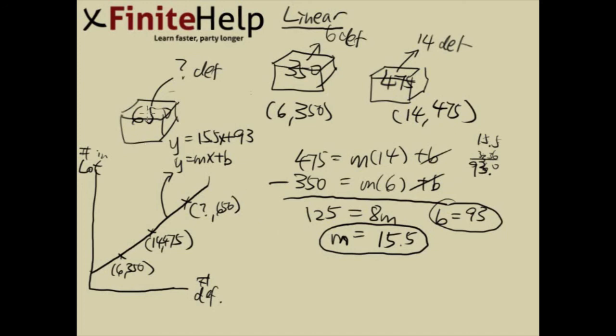Now for the last step, we simply have to put in 650 for y. So we have 650 equal 15.5 times x plus 93.